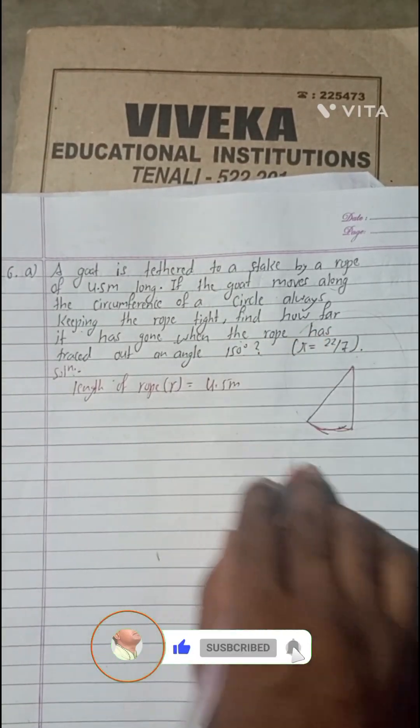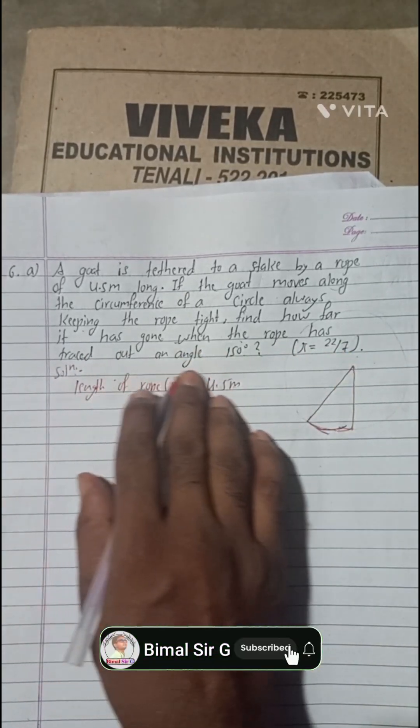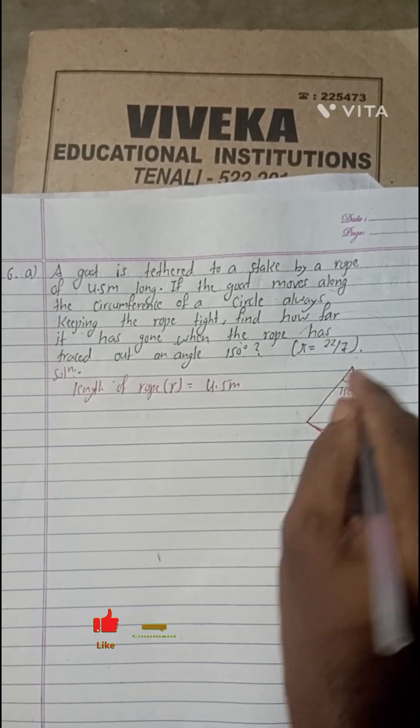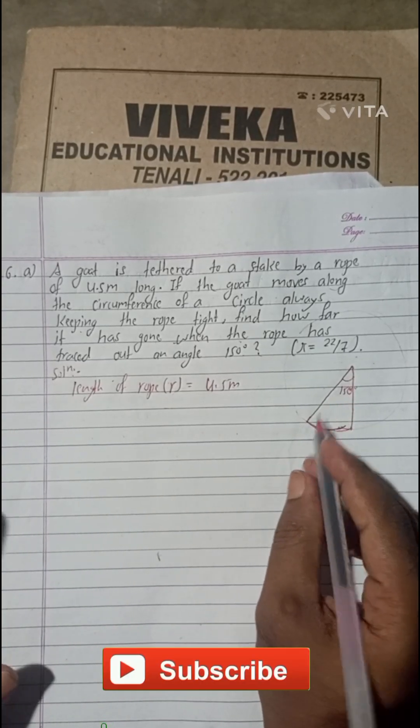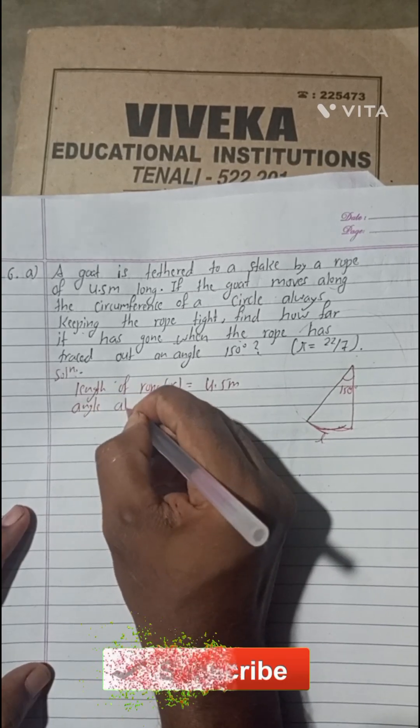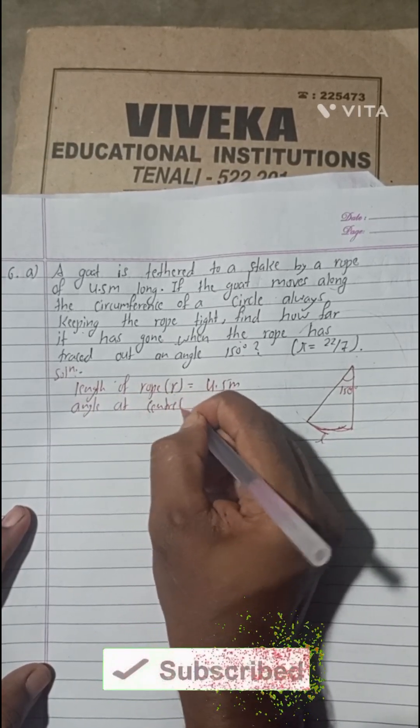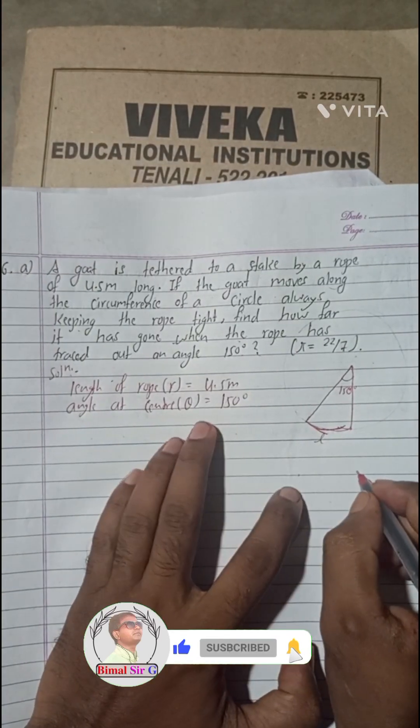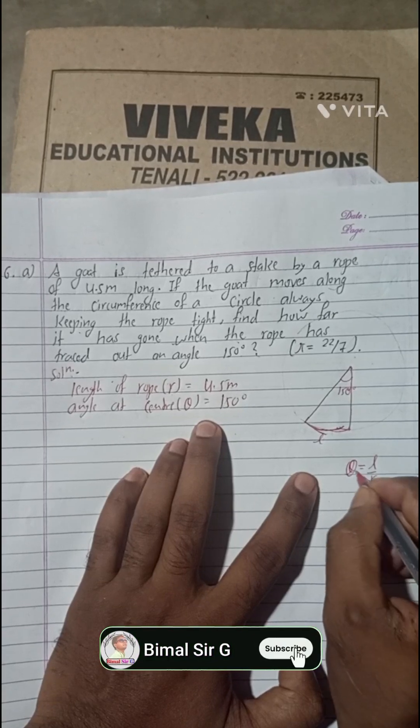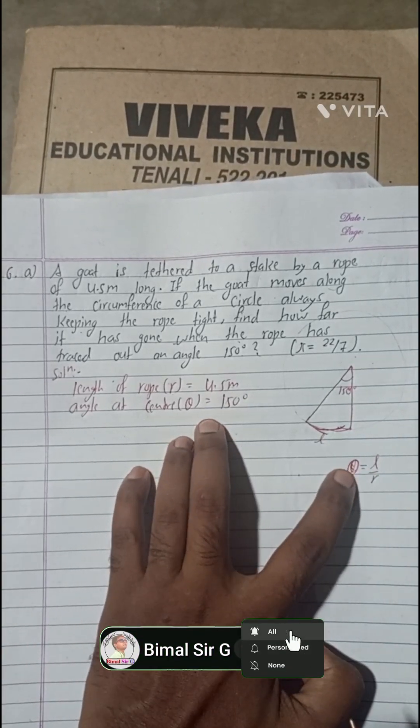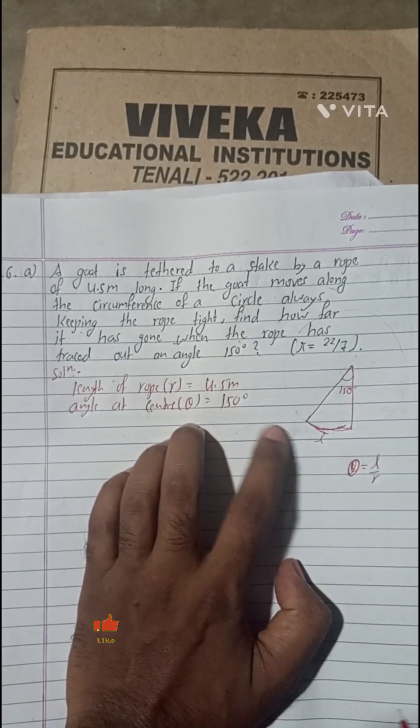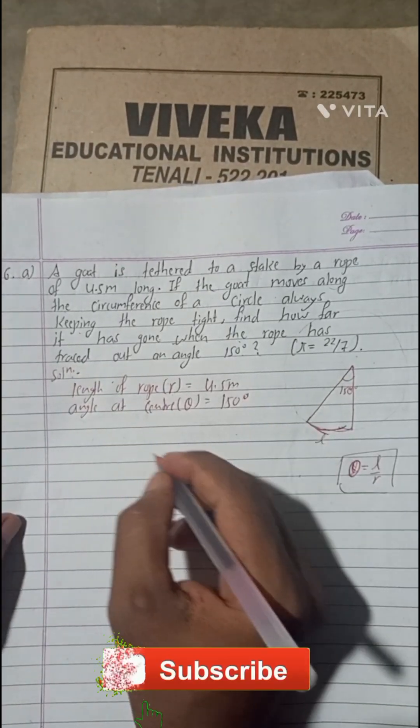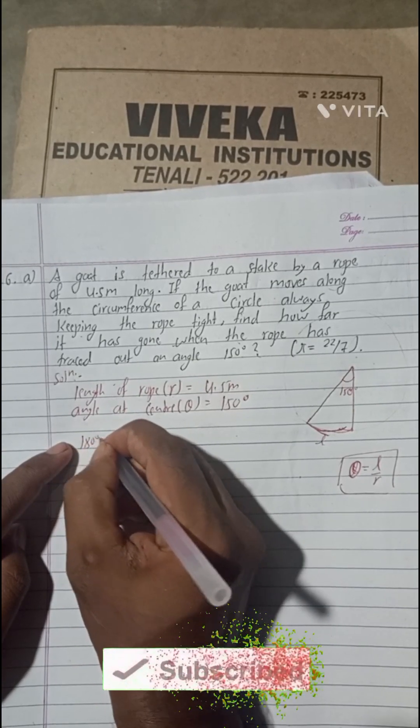If the goat moves along the circumference of circle always keeping the rope tight, so if this is tight it will make a perfect circle. How far it has gone when the rope has traced out an angle of 150 degrees? If this angle is 150 degrees, then we have to find this arc length. Now, angle at the center, denoted by theta, so theta is equal to 150 degrees. We have one formula: theta equals L by R. This theta is in radian form, so we have to change this degree into radian.